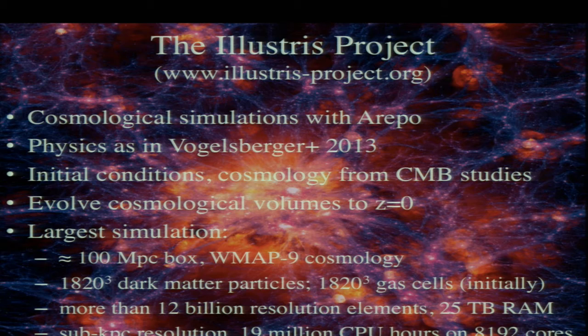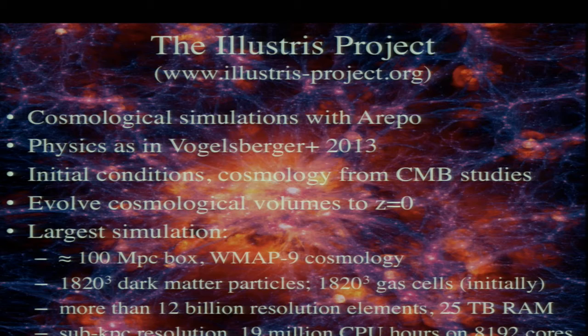The larger simulation I'll talk about today was a volume 100 megaparsecs across, using a WMAP-9 cosmology. This simulation started off with 1820 cubed dark matter particles and initially 1820 cubed cells to describe the gas, with that number changing as some gas is turned into stars. In total, at least initially, there were more than 1200 billion resolution elements. This is a very computationally intensive problem requiring 25 terabytes of memory. With these choices, we can achieve resolution on the order of a few hundred parsecs—good enough to describe the structural properties of galaxies, though not internal star-forming regions. This particular simulation took about 20 million CPU hours running on about 10,000 cores simultaneously.